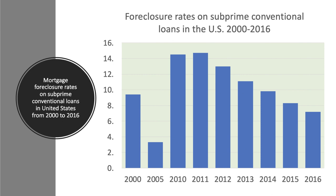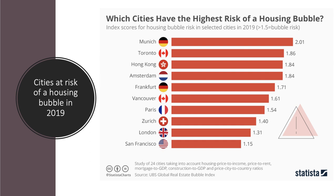This chart shows the foreclosure rates on subprime conventional loans. You can see that from a low level of under 4%, the ratio of bad debts on housing loans that banks call in increased from about 3% to over 14% between 2005 and 2010. That was the trigger for the subprime housing crisis in the United States, which then fed through much bigger contagion effects to the wider real economy, including many developed countries across the world.